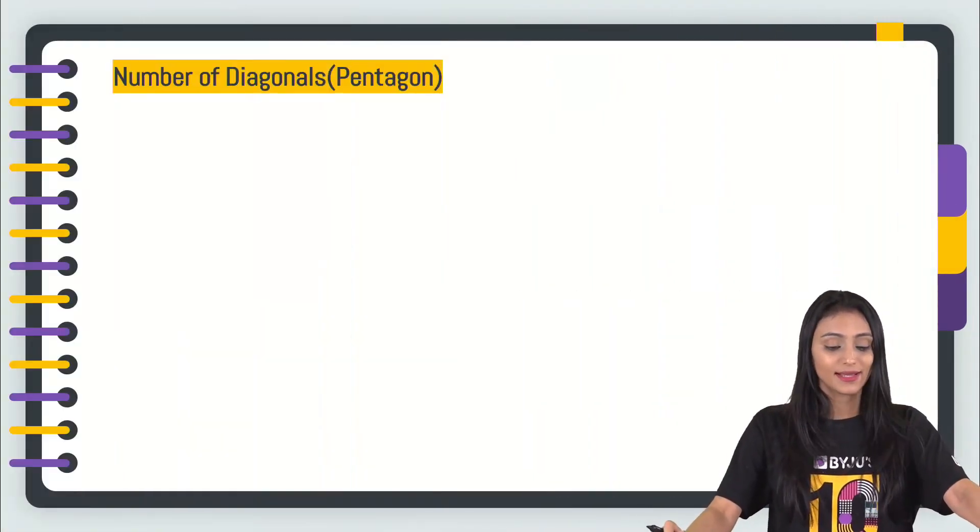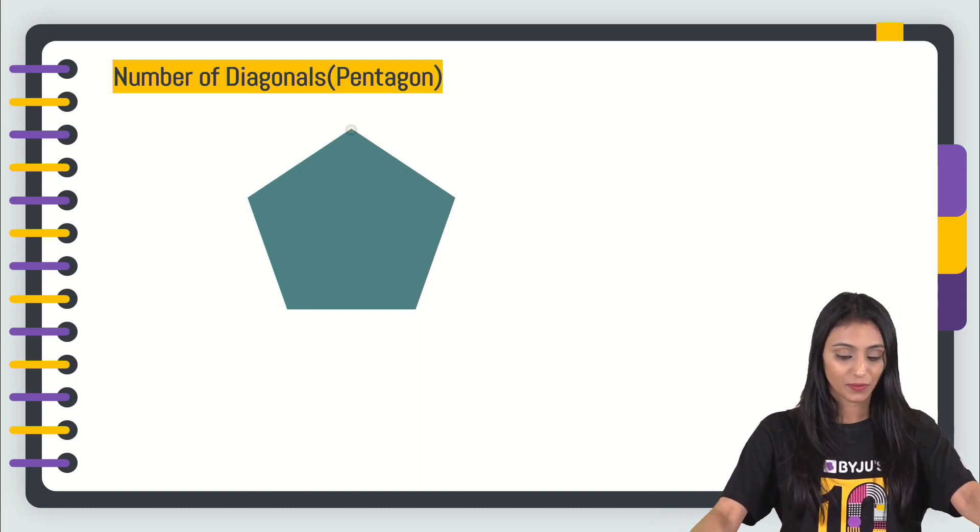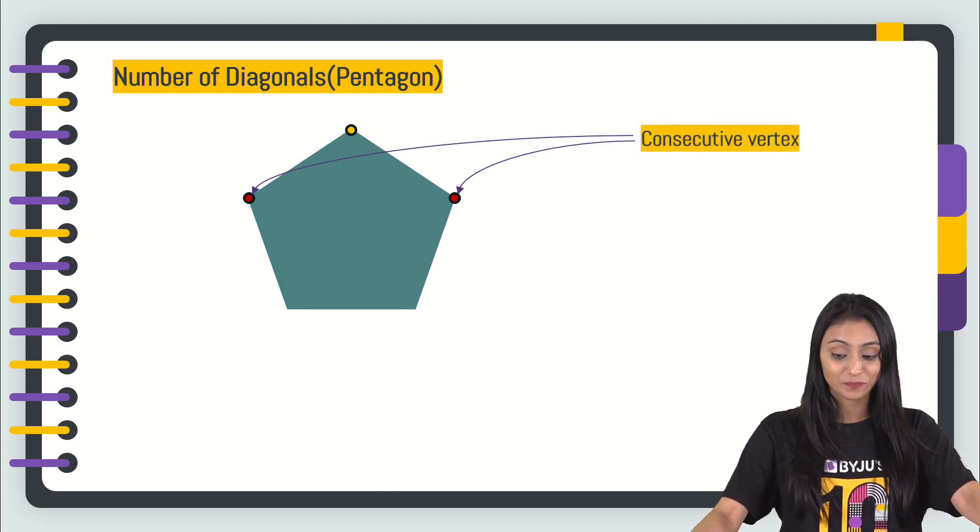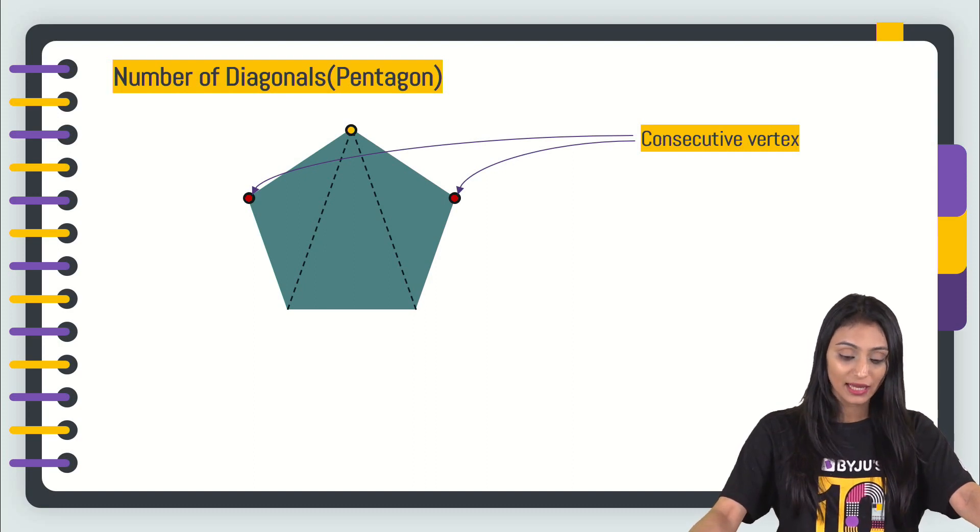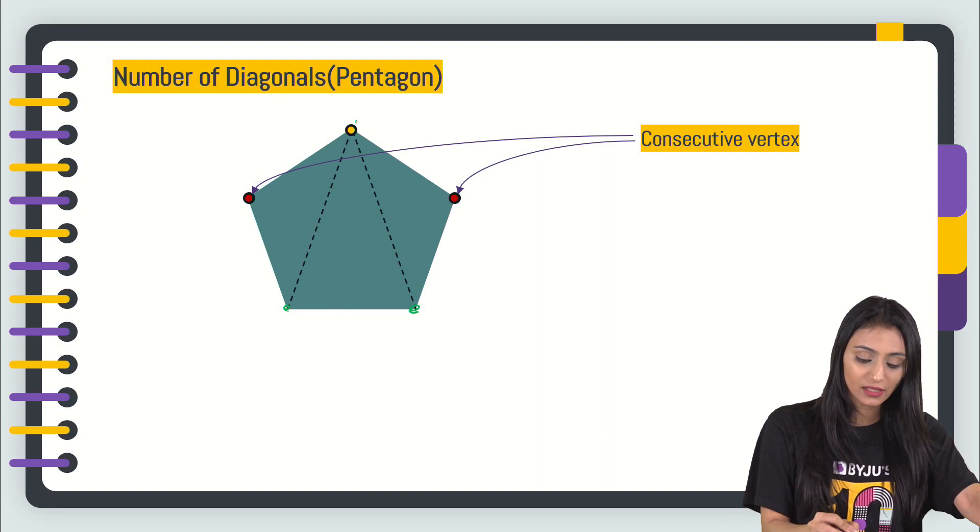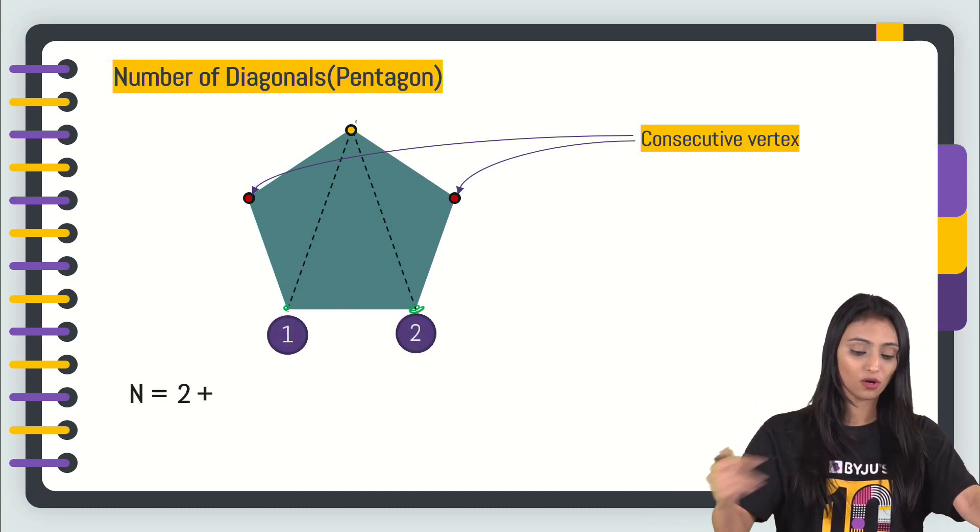Well, to answer this, let's first see the number of diagonals of a pentagon. This is a five-sided figure. This is a vertex of the pentagon. These two are the other vertices, but these are the consecutive vertices. So if I try to find out the diagonals from this vertex, we only consider the non-consecutive ones. So one, two, there are in all two diagonals from this vertex.